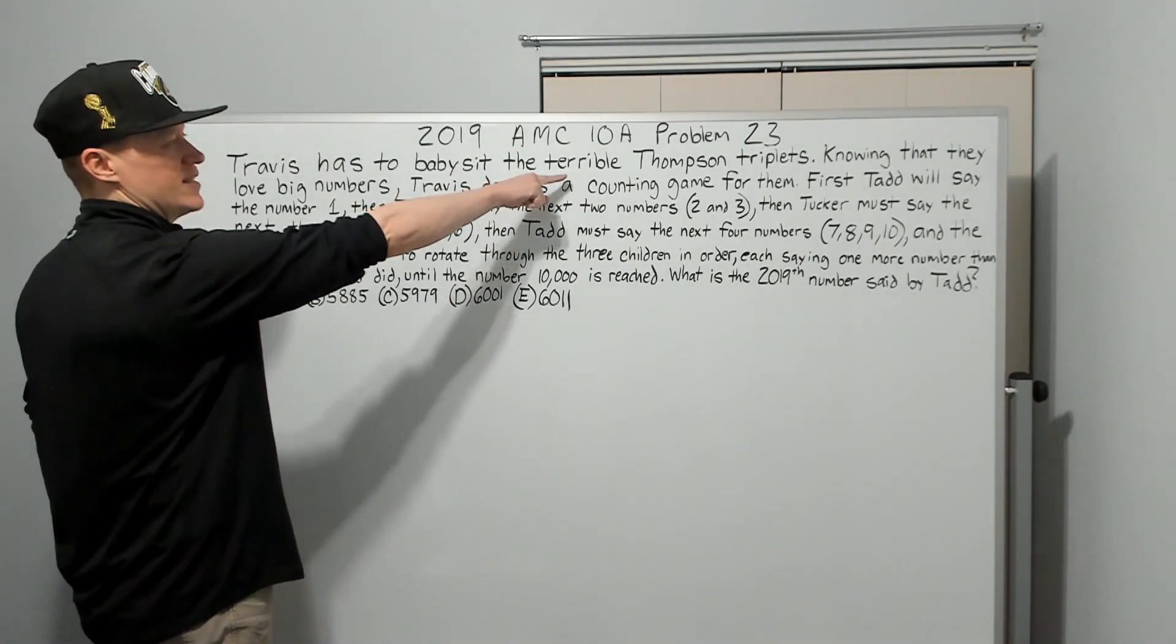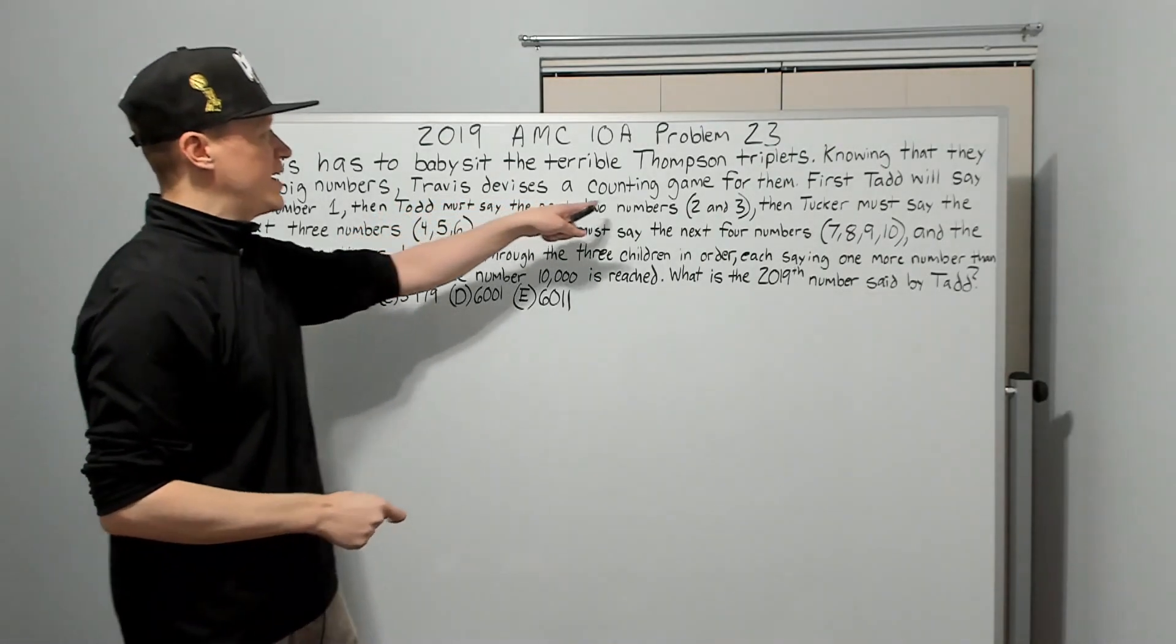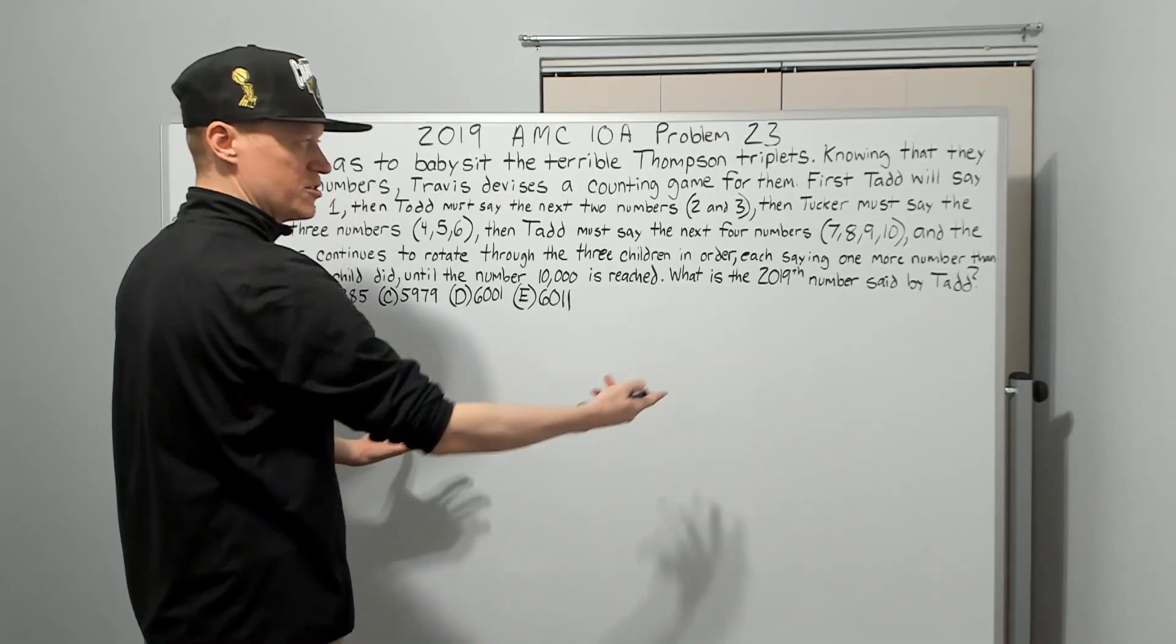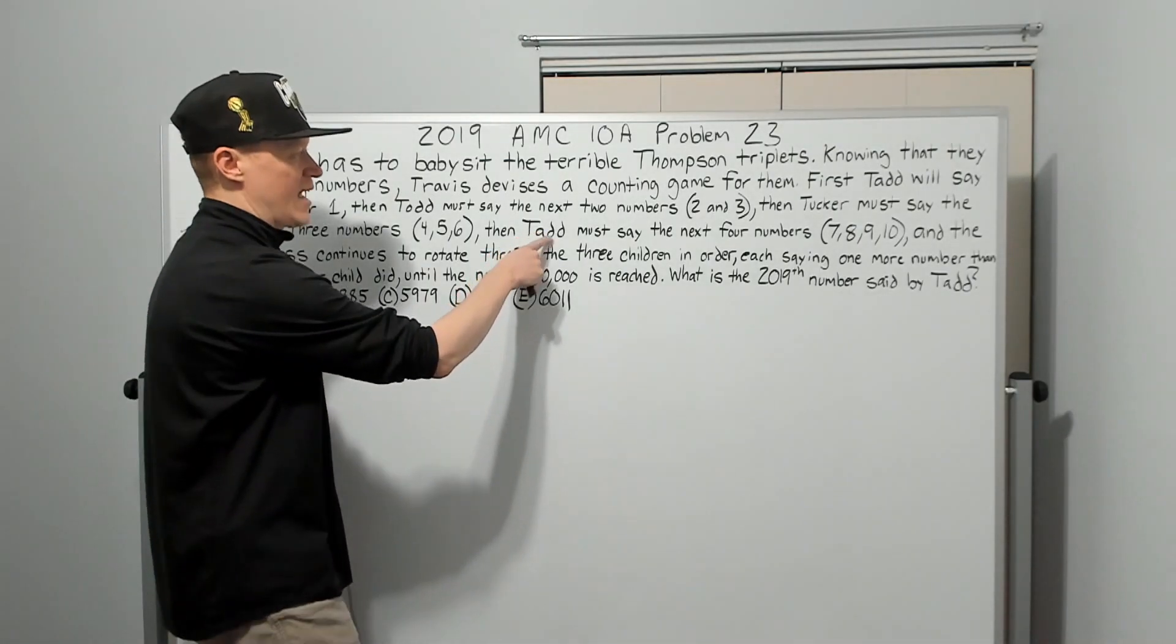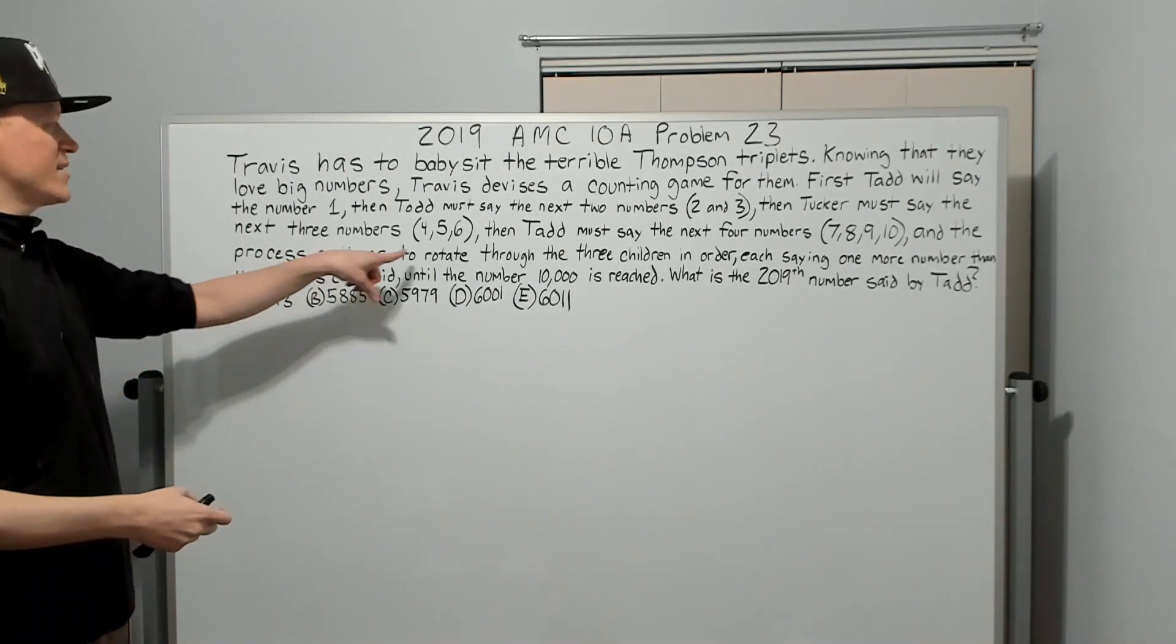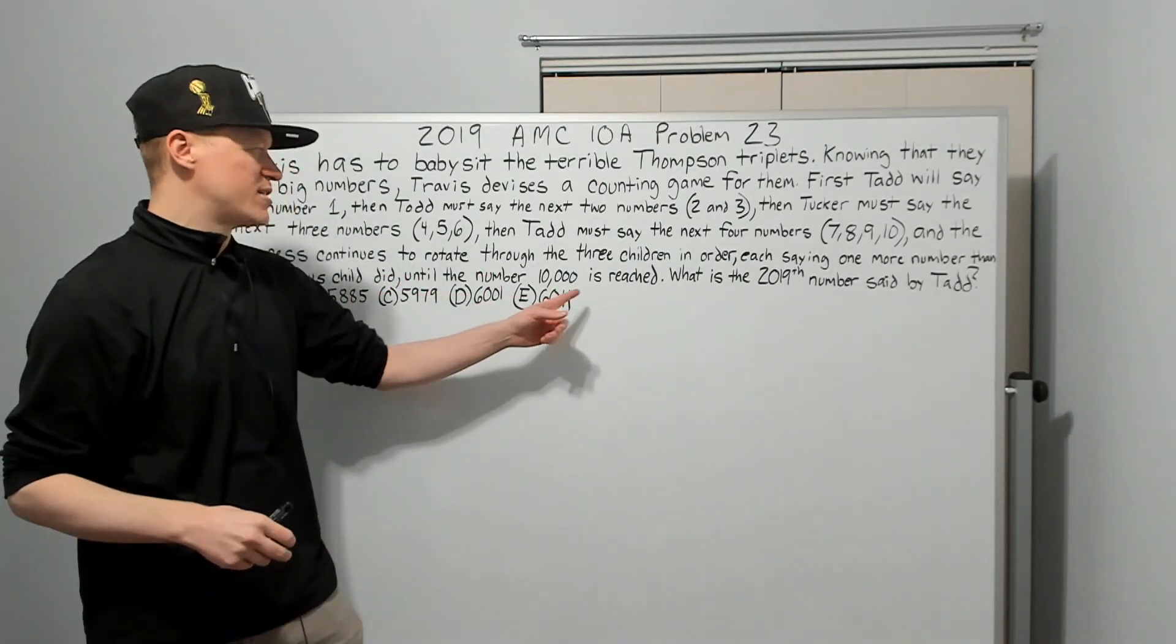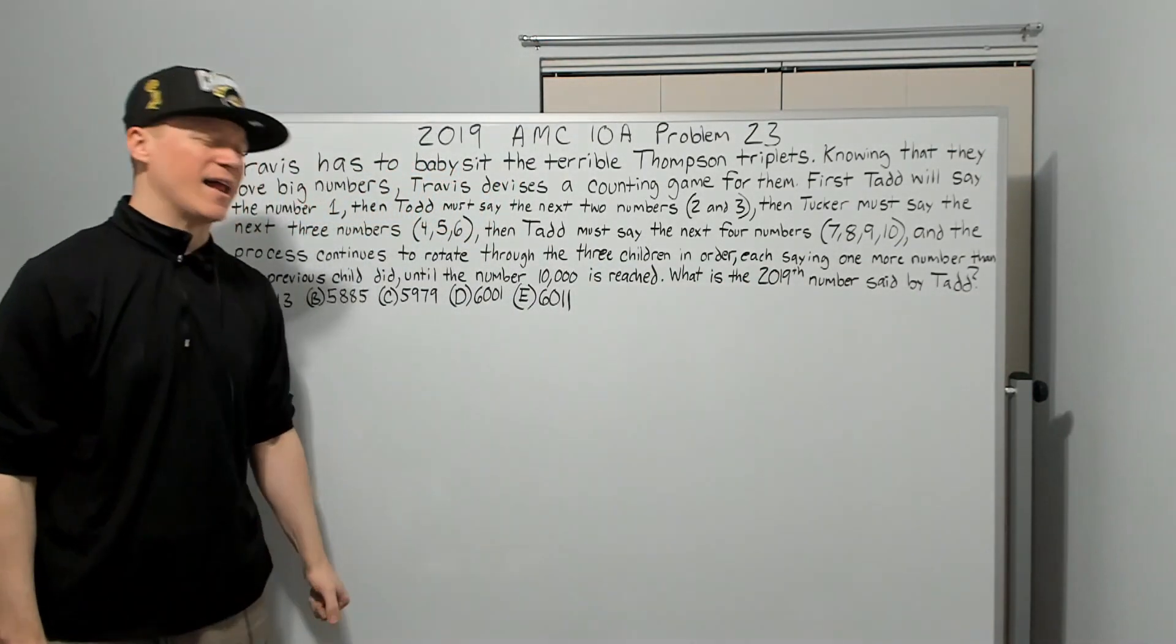Travis has to babysit the terrible Thompson triplets. Knowing that they love big numbers, Travis devises a counting game for them. First, Tad will say the number 1. Then Todd must say the next 2 numbers, 2 and 3. Then Tucker must say the next 3 numbers, 4, 5, and 6. Tad must then say the next 4 numbers, 7, 8, 9, and 10. We see how this is going, right? And the process continues to rotate through the 3 children in order, each saying one more number than the previous child did until the number 10,000 is reached. What is the 2019th number said by Tad?